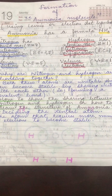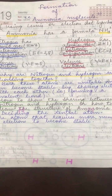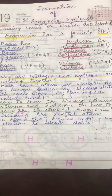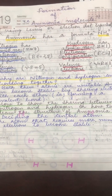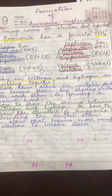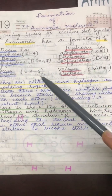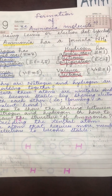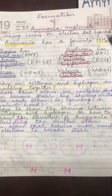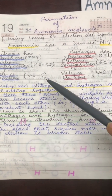We decide which atom will be the central atom before we start showing bonding between atoms. To know this, we first need to see which of the two atoms requires more electrons. Nitrogen requires three electrons and hydrogen requires only one electron to become stable.